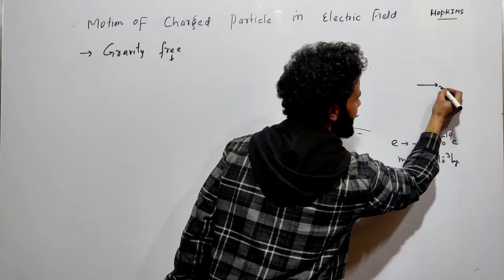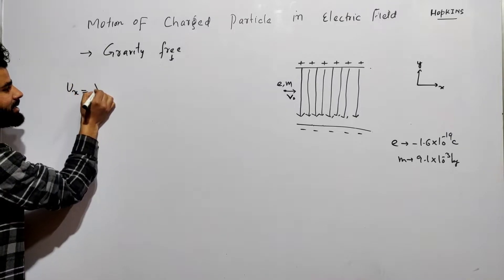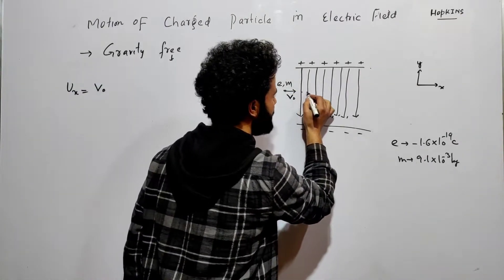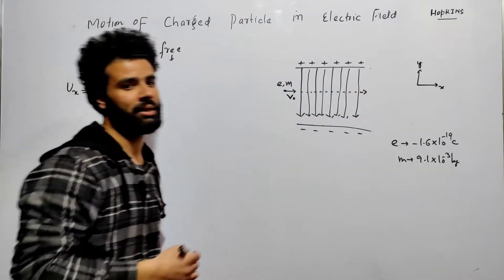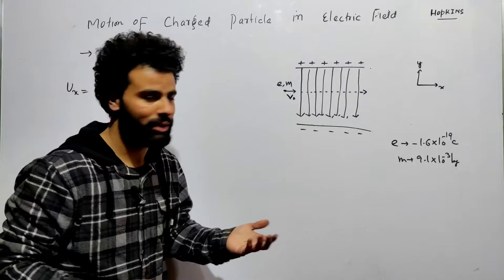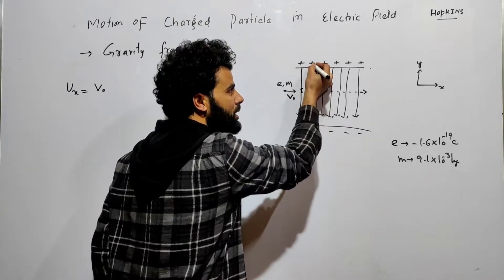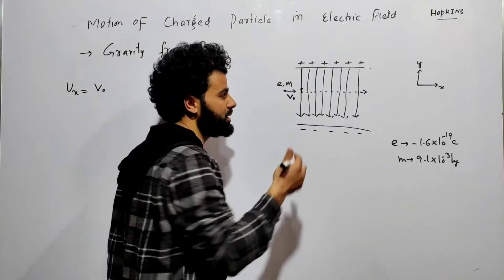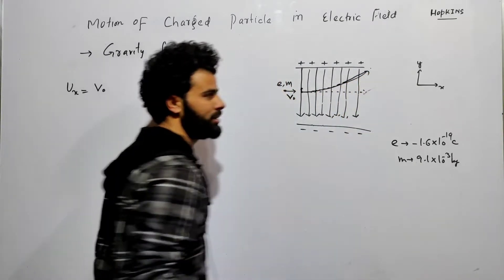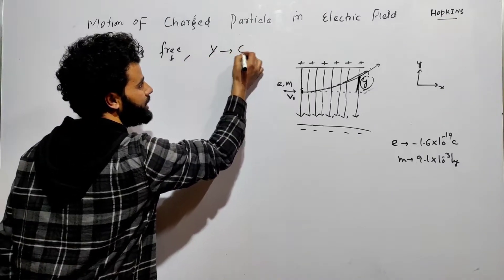Let me consider this as the x-axis and this as the y-axis. The initial velocity along the x-axis is v₀. Without the electric field, the electron would travel in a straight line. But when it enters the electric field, the field deviates its path. The positive plate attracts the electron upward, so the path curves upward. The deviation in the y-direction is called y, and we need to calculate this deviation.